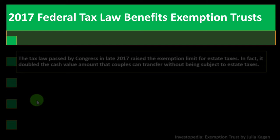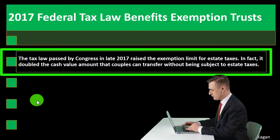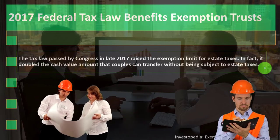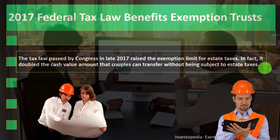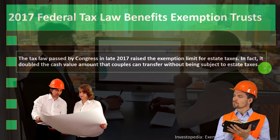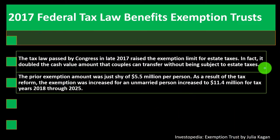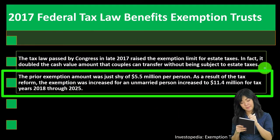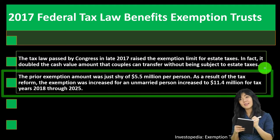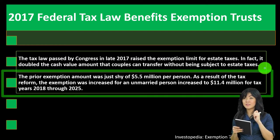The 2017 federal tax law benefited exemption trusts. The tax law passed by Congress in late 2017 raised the exemption limit for estate taxes — in fact, it doubled the cash value amount that couples can transfer without being subject to estate taxes. The prior exemption amount was just shy of $5.5 million per person. As a result of the tax reform, the exemption was increased to $11.4 million for an unmarried person, for tax years 2018 through 2025.